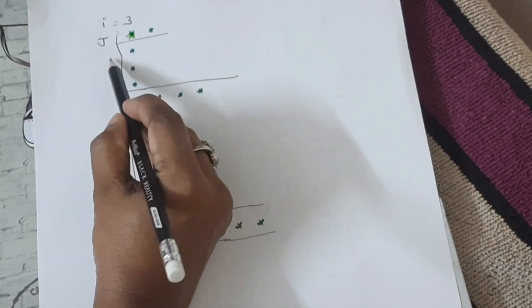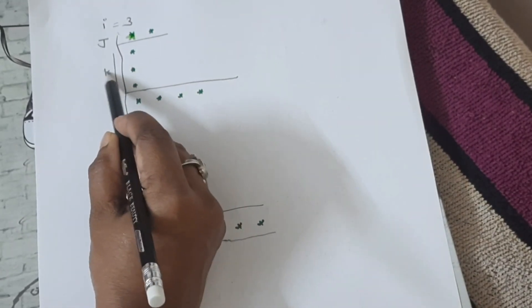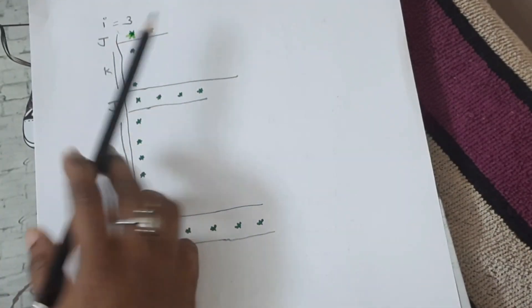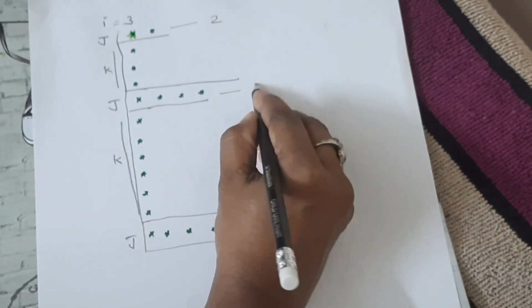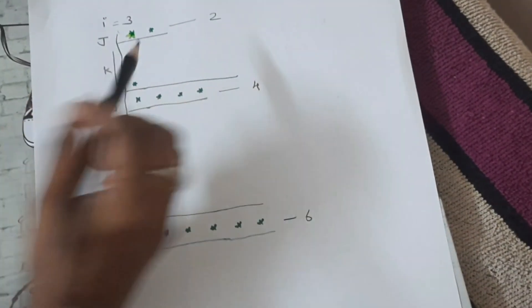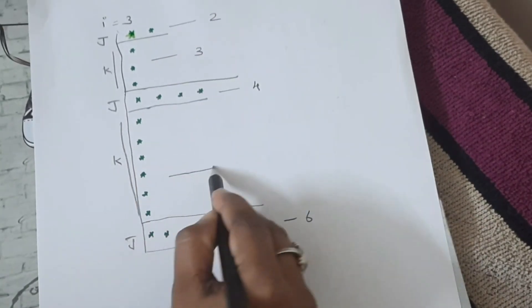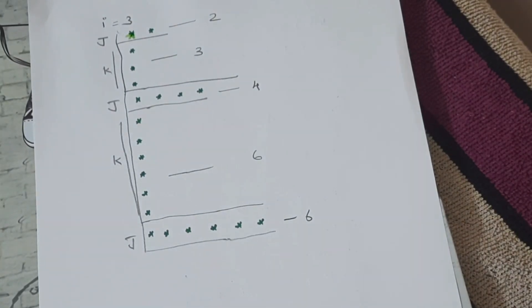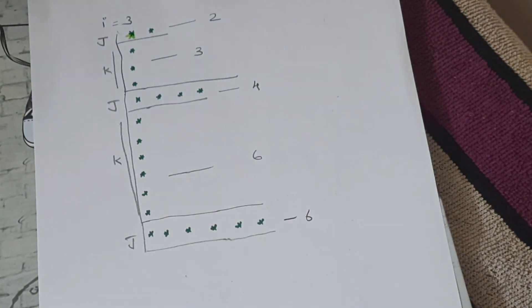This is J, this is K. This is J, this is K. This is J — J is 0. This is 2. Now here it is 4 star, so inside it is 6 star. This K is 3 or 6 star. We put a star here. Now we have to print this pattern.